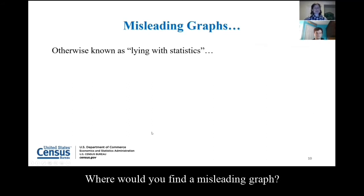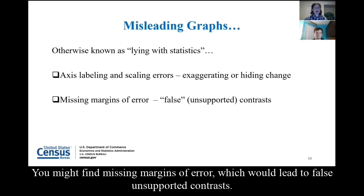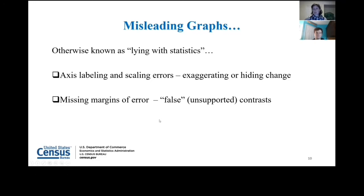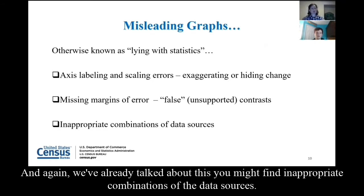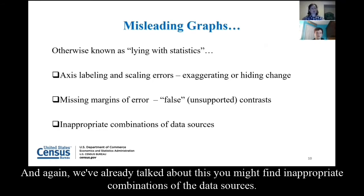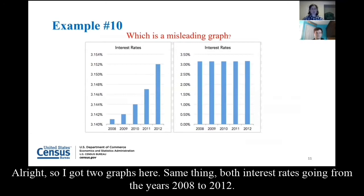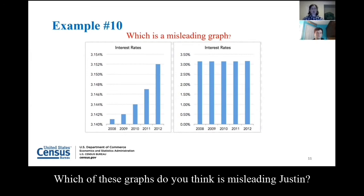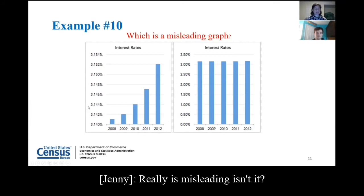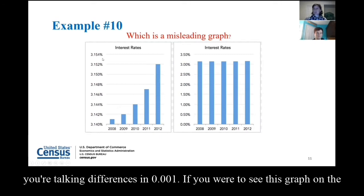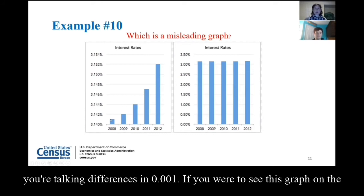Now I want to talk about misleading graphs — otherwise known as one great method of lying with statistics. Where would you find a misleading graph? You might see it in axis labeling and scaling errors where the axis is either exaggerating or hiding change. You might find missing margins of error leading to false unsupported contrasts, and inappropriate combinations of data sources. Here are two graphs — both showing interest rates from 2008 to 2012. The left one is definitely misleading. Look at the scale on the y-axis — you're talking differences of about 0.001. If you weren't looking at the y-axis, you would think there'd been a huge increase in interest rates since 2008. But that's not the real story.